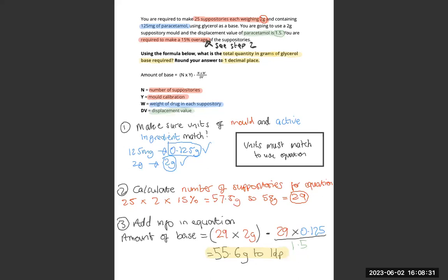I've circled everything you need. Get the circled numbers, put them into the equation, nice and color coded. You get 55.6g to 1 decimal place. Hope that makes it a bit clearer. I'm going to show you another method again soon.